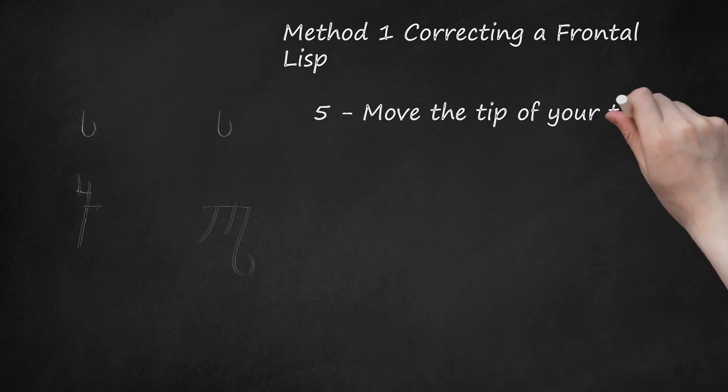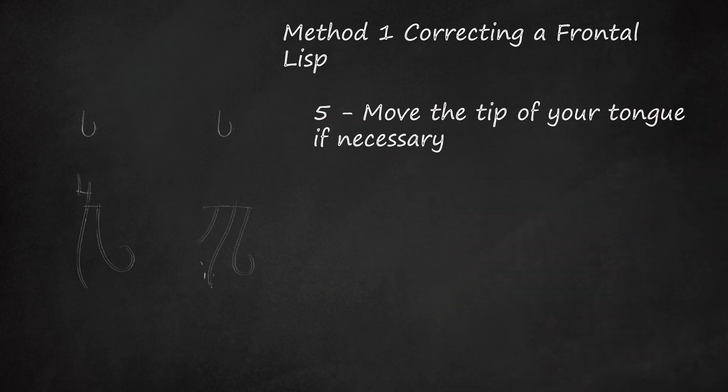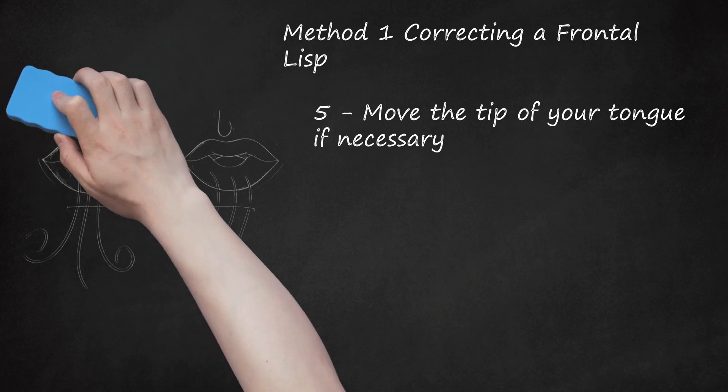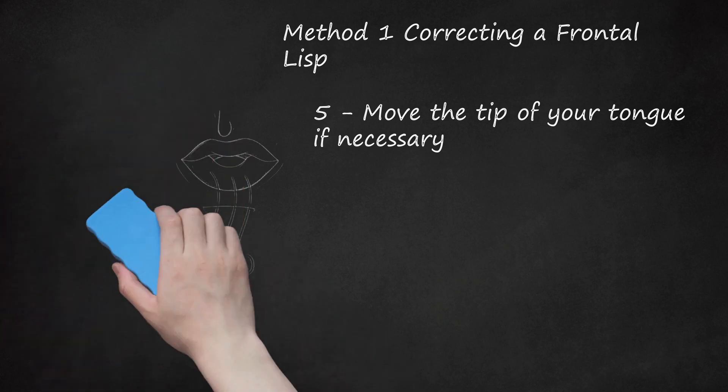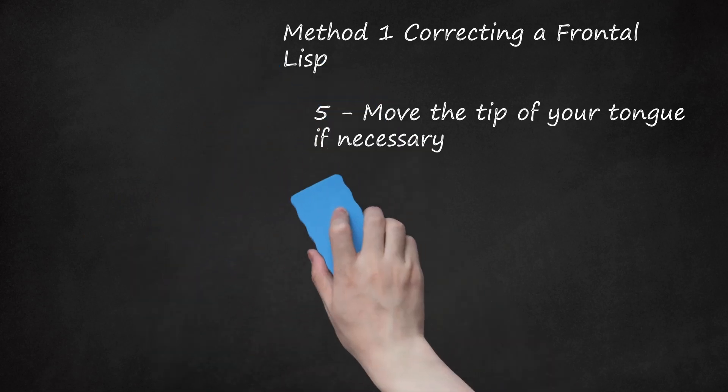Move the tip of your tongue if necessary. If you aren't getting an S sound yet, focus on the tip of your tongue. Move this slightly as you blow until you feel a current of air over it. When the tip of your tongue is close to the roof of your mouth, you'll likely hear an S or a sound close to it. Don't worry if you can't make an S sound on your first try. The steps below will help you adjust to the right position.